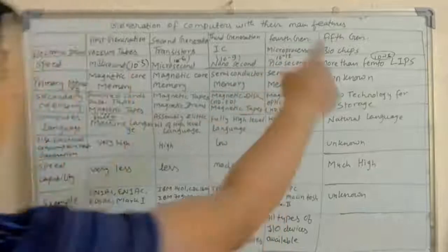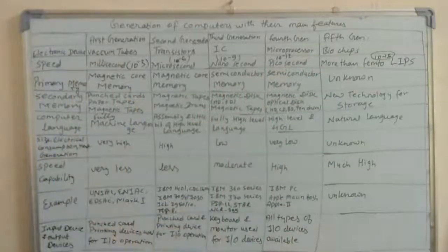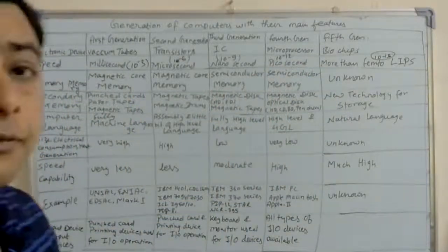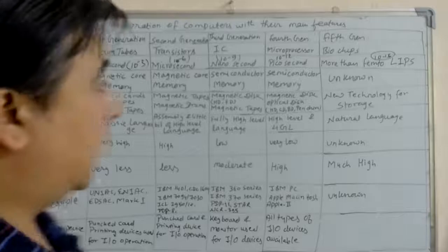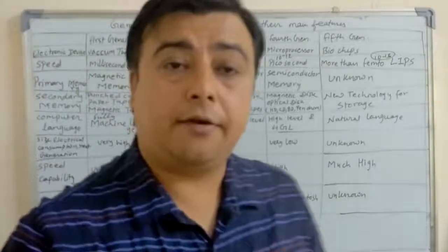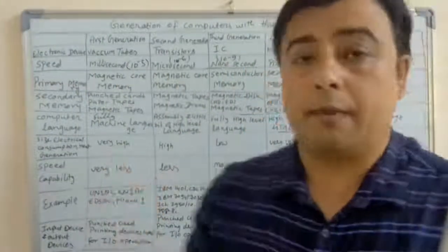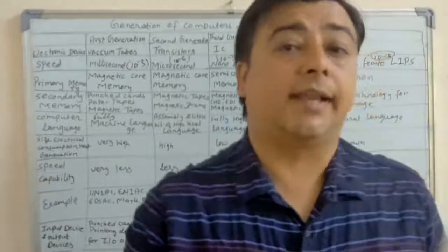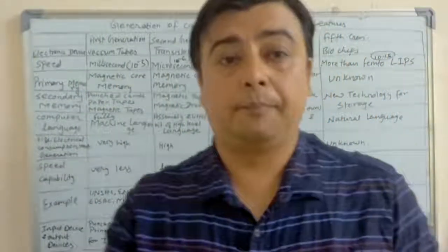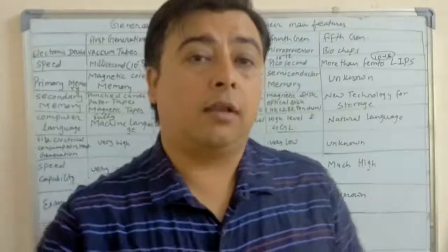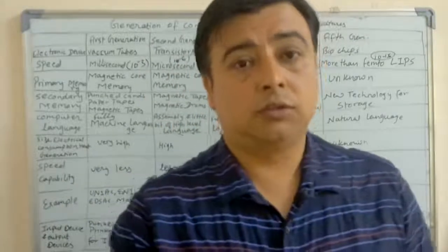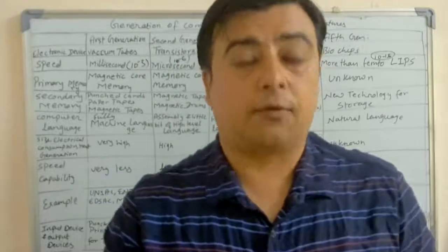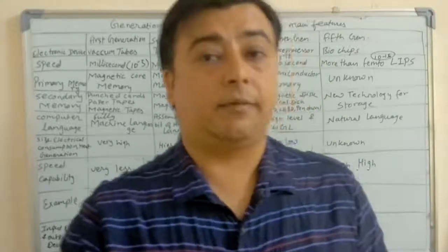This is the tabular format of the generation of computers. I think you have understood a lot from this table about the generation of computers. I will upload other videos too. Thanks for watching the video.